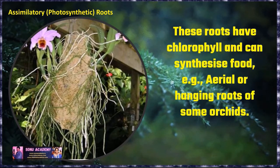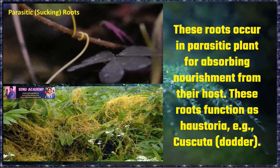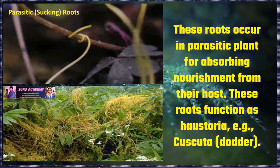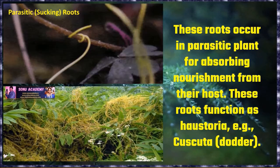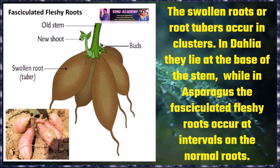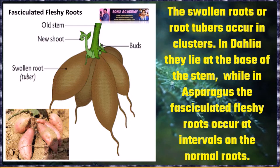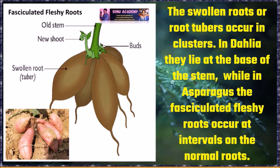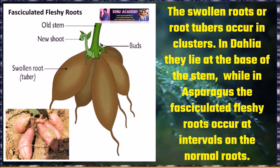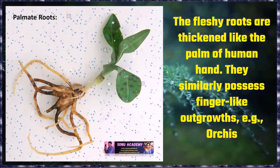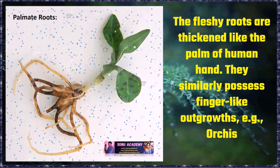Assimilatory or photosynthetic roots: these roots have chlorophyll and can synthesize their own food. Example: aerial or hanging roots of some orchids. Parasitic or sucking roots: these roots occur in parasitic plants for absorbing nourishment from their host. These roots function as haustoria. Example: Cuscuta. Fasciculated fleshy roots: the swollen roots or root tubers occur in clusters. In dandelion, they lie at the base of the stem, while in asparagus the fasciculated fleshy roots occur at intervals on the normal roots. Palmate roots: the fleshy roots are thickened like the palm of a human hand and similarly possess finger-like outgrowths. Example: orchis.